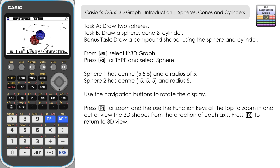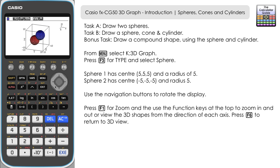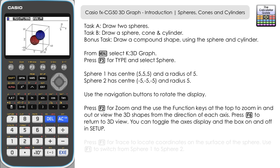Press F6 to go back to the original display. Around the screen we have the direction of the axes indicated in the top right-hand corner, a display box showing where the spheres are being displayed, and labels on the axes. You can toggle all of these on and off in the setup menu. They're fully on by default, which is quite useful for seeing where the spheres are located.